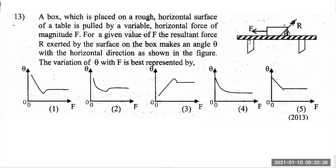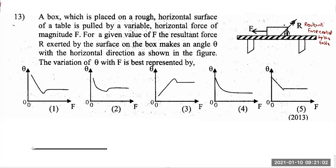The box is kept on a rough horizontal surface and a horizontal force is applied on it. R is the resultant force exerted by the table on the box. We have to think of all the forces exerted by the table on the box — only then we'll be able to analyze this properly. Let me draw another diagram where we can analyze this more clearly. On a rough surface we have kept an object, and F is applied and gradually increased, as you can see in all the graphs.